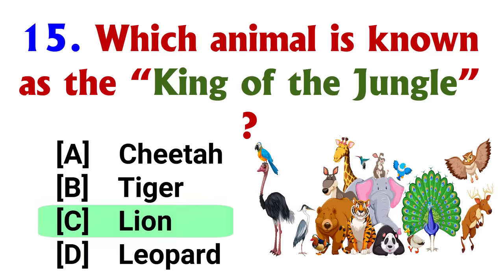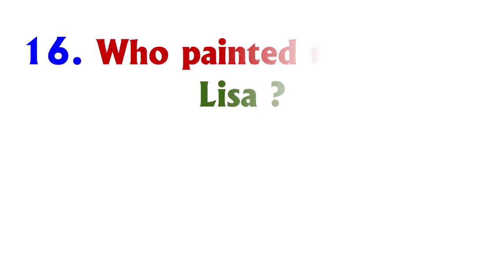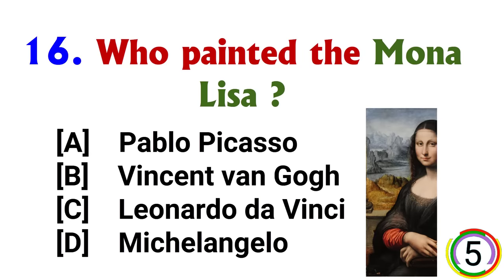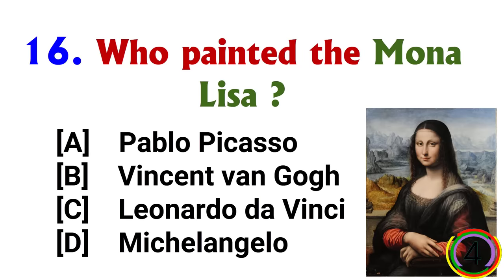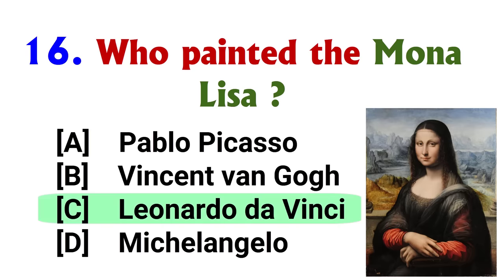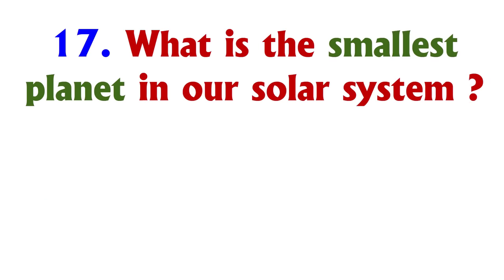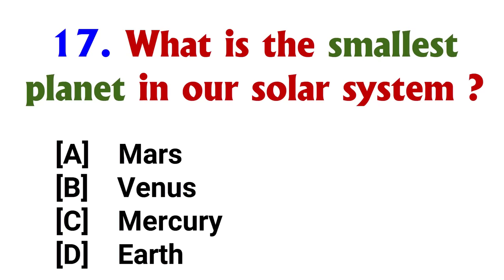Answer: option C, Pacific Ocean. Which animal is known as the king of the jungle? Answer: option C, Lion.